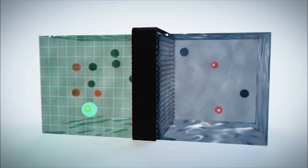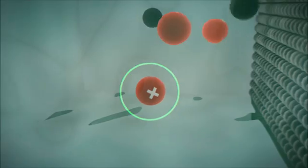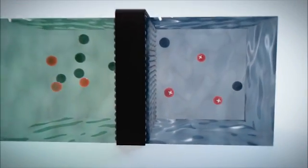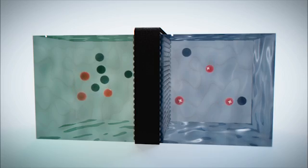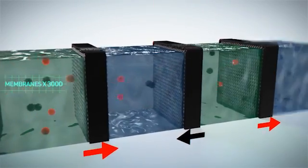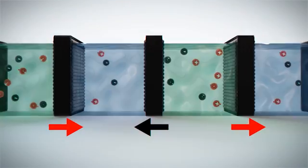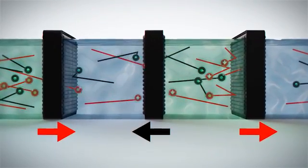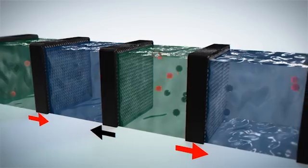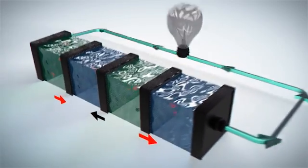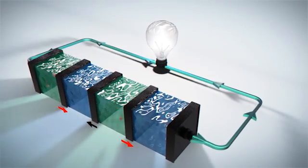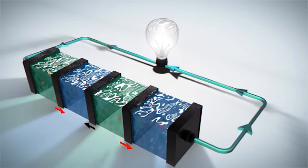Special membranes are used to control the process, which allow only negatively or only positively charged ions to pass through. By placing the membranes in an alternating way between the seawater and the freshwater, the ions are forced to move in specific directions, generating a current that can then be easily converted by electrodes into an electrical current.